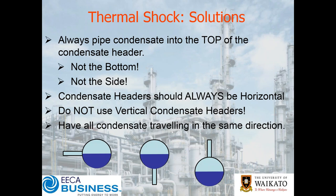What are the solutions? Always — and I did actually capitalize the word 'always' — always pipe condensate into the top of the condensate header. Never on the bottom and never on the side. Condensate headers should always be horizontal. Do not use a vertical condensate header. Have all condensate traveling in the same direction. We don't want a condensate header where the takeoff is in the middle. You want the condensate header on a slight incline preferably, so that it actually self-drains, and all the condensate heading in the one common direction.